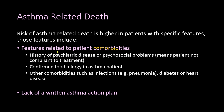Additional risk factors for asthma-related death include history of psychiatric disease or psychosocial problems indicating poor treatment compliance, confirmed food allergy, and other comorbidities such as infections like pneumonia, diabetes, or heart disease. Lack of a written asthma action plan also increases the risk of asthma-related death.